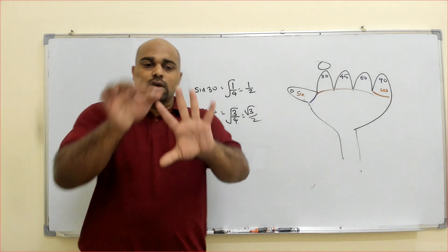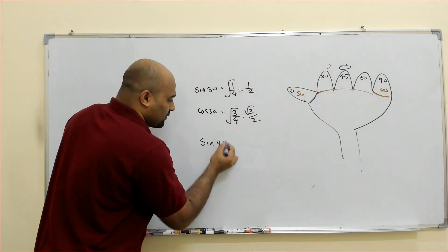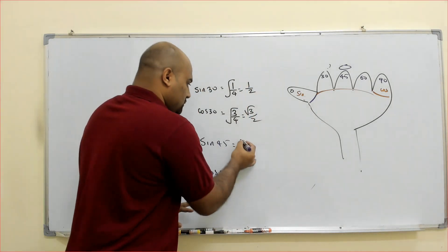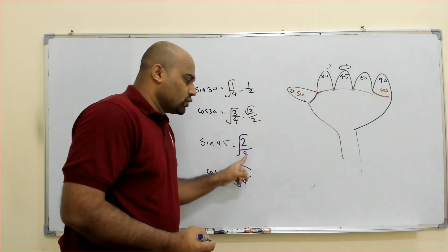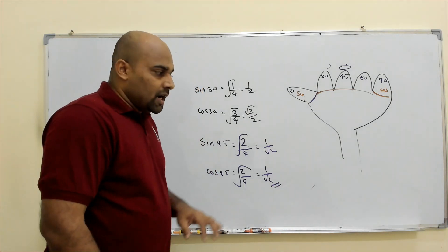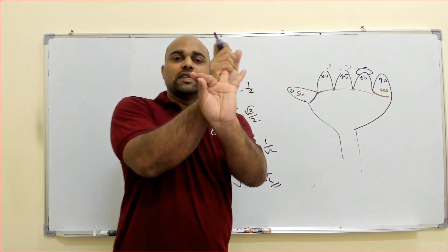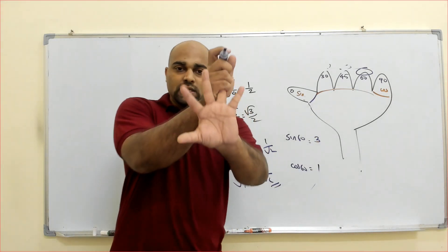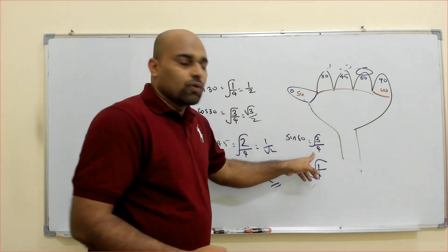Now hold 45. For sin 45 and cos 45: sin side has two fingers, cos side also has two fingers. Both divide by 4 and take root: √(2/4) = √(1/2) = 1/√2. Now hold 60: sin side has three fingers, cos side has one finger. So sin 60 = √(3/4) = √3/2, and cos 60 = √(1/4) = 1/2.